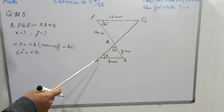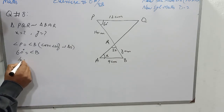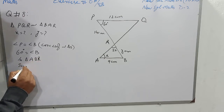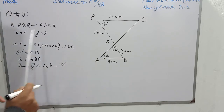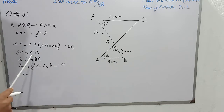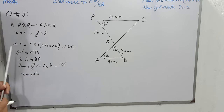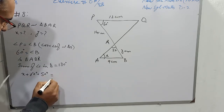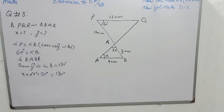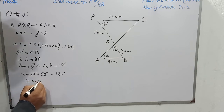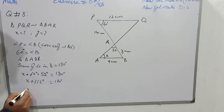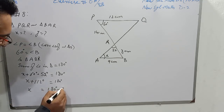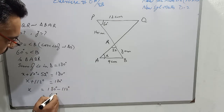Now we will discuss triangle ABR. In triangle ABR, the sum of angles in a triangle is equal to 180 degrees. Angle B is 60 degrees, and angle R is 52 degrees. Summing both angles gives 112 degrees. So X plus 112 degrees equals 180 degrees. When we transfer 112 to the other side it becomes minus, and the value of X is 180 minus 112, which equals 68 degrees.